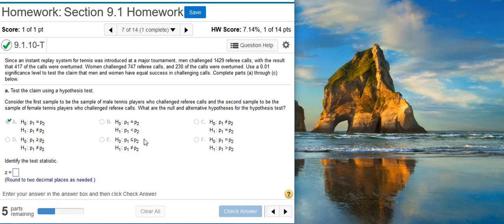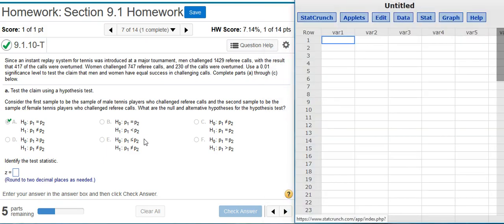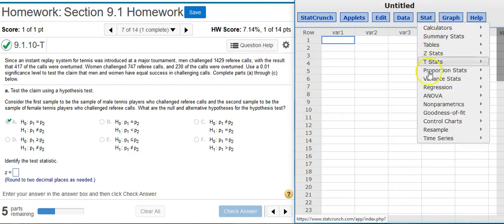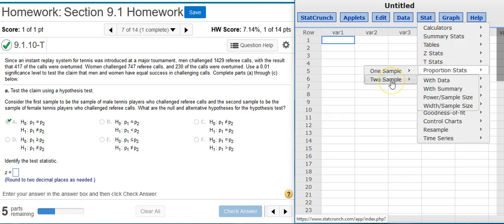Inside StatCrunch I go to Stat, Proportion Stats, because I'm dealing with proportions, Two Sample because I'm comparing two different samples, one for men and one for women, With Summary because I don't have actual data, just summary statistics.